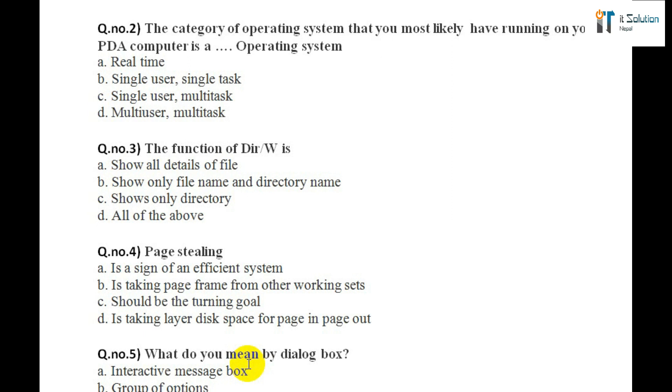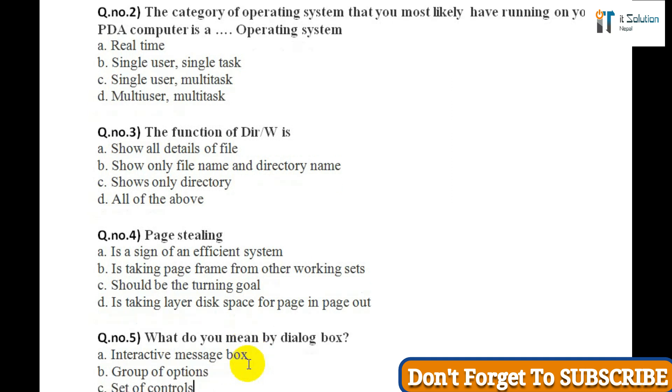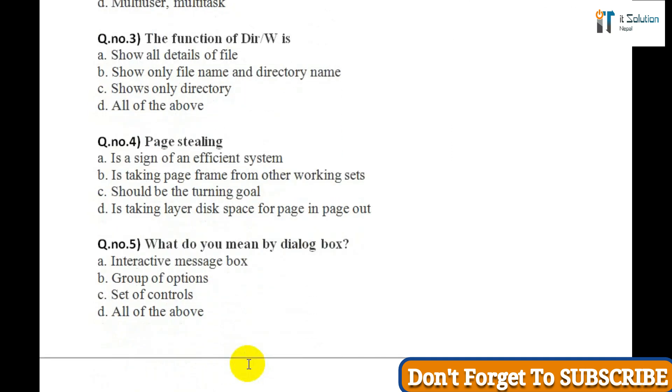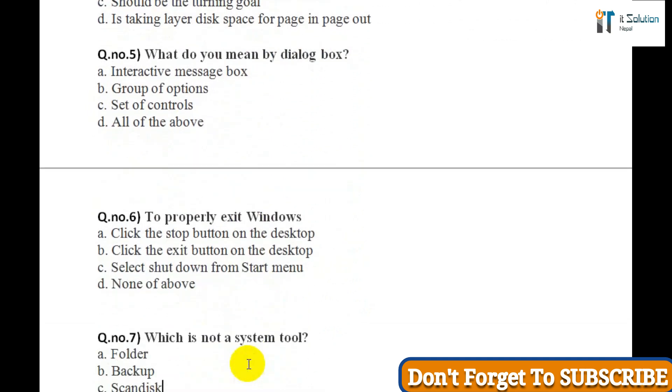Question number four: Page stealing: A) Is a sign of an efficient system, B) Is taking page frame from other working sets, C) Should be the turning goal, D) Is taking layer disk space for pages in page out. Question five: What do you mean by dialog box? A) Interactive message box, B) Group of options.